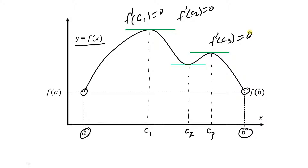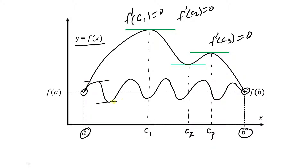Notice you can even imagine a function that would be oscillating up and down, where you would have as many as nine points where f prime of c would be equal to zero.